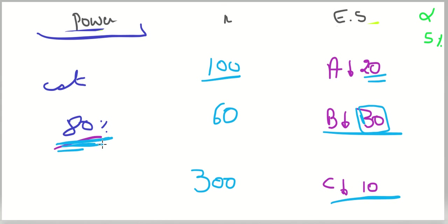That covers everything about the relationship between power, sample size, and effect size. Next, we'll go through a hypothesis testing exercise, and after that application we'll raise questions about the things covered today — power, type 1 error, sample size, and how these things impact results.